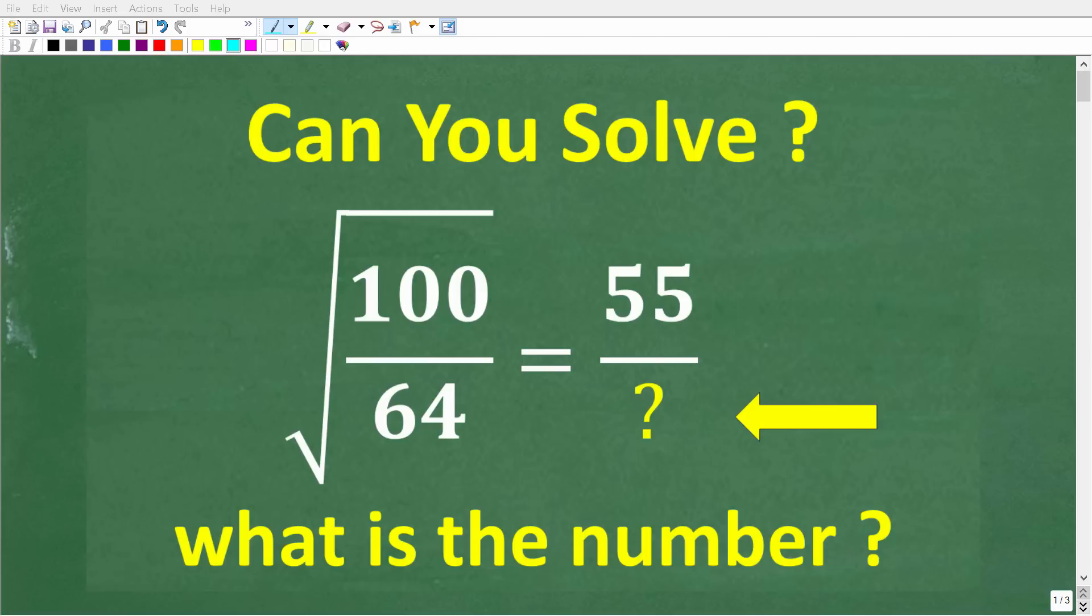Alright, so let's see if you can determine what the mystery number is in this problem. And we're talking about the number that goes right here. So the question is, we have the square root of 100 over 64, and this is equal to 55 over some mystery number.